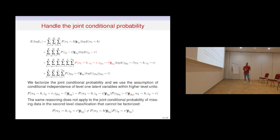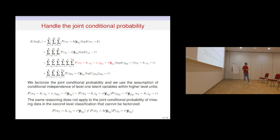The main problem is that when we write the expectation of the complete log-likelihood, we need to consider the joint conditional probability between W, Z, and X given the observed data. We can split this into P(W, Z | Y) and P(X | W, Z, Y_{JKQ}), using an independence assumption within higher-level units. However, once we condition on the observed data, W and Z are no longer independent, so the joint conditional probability cannot factorize. For this reason, we cannot use the upward-downward algorithm but must instead use a stochastic version of the EM algorithm, which uses sample simulation techniques to reconstruct this joint conditional probability.